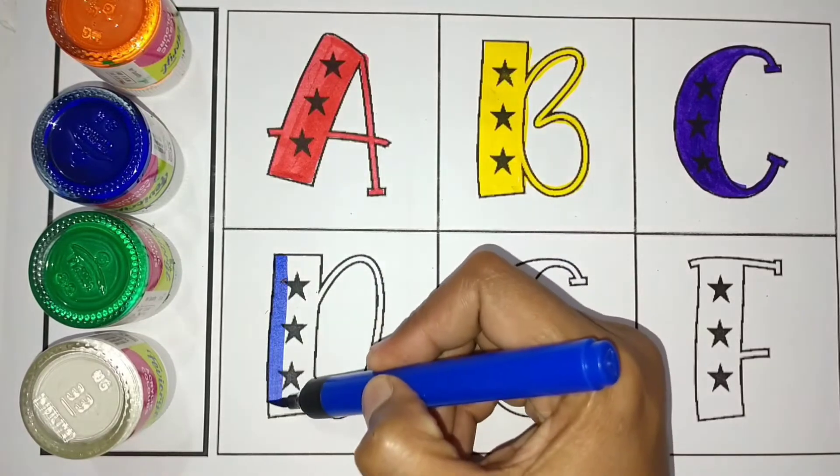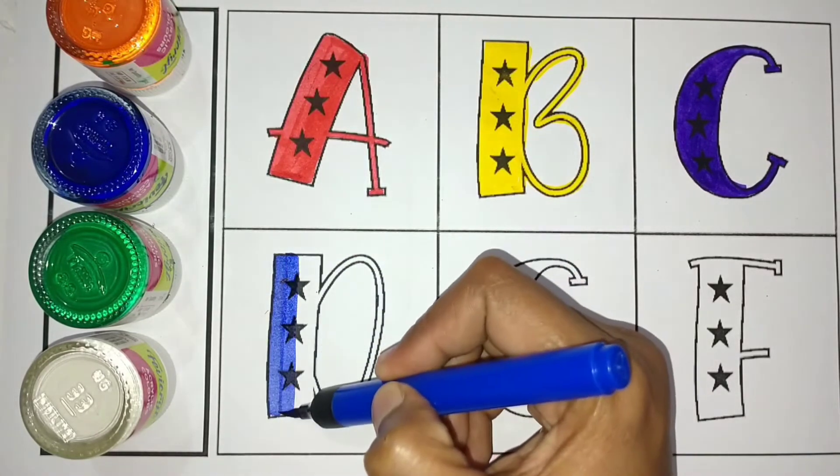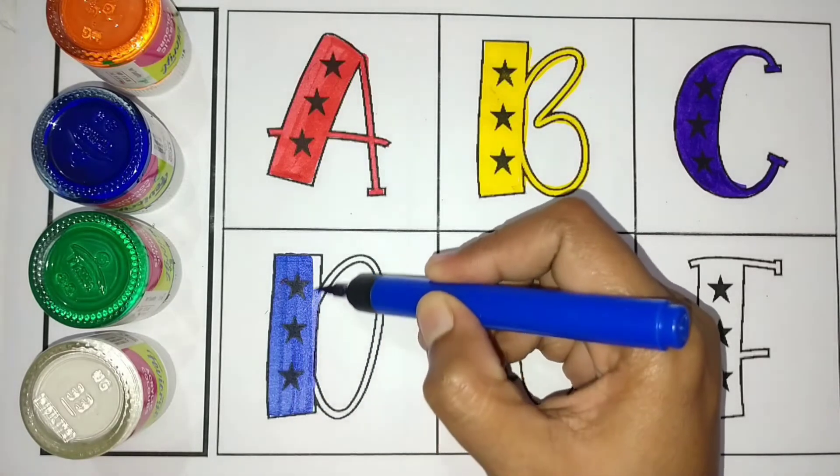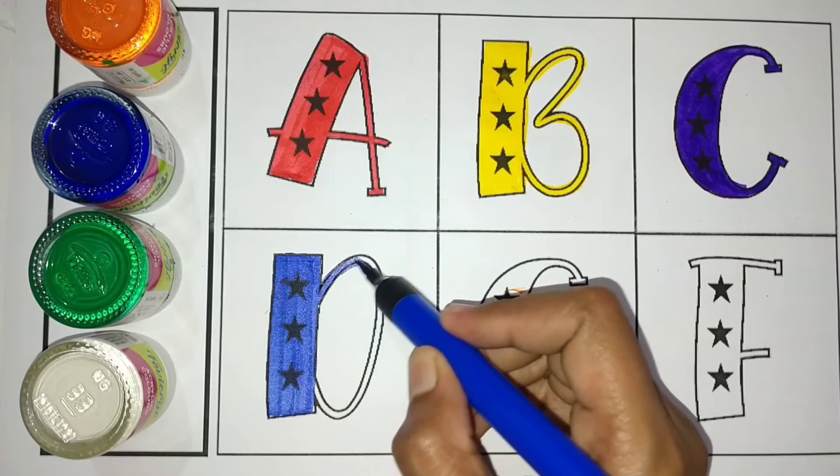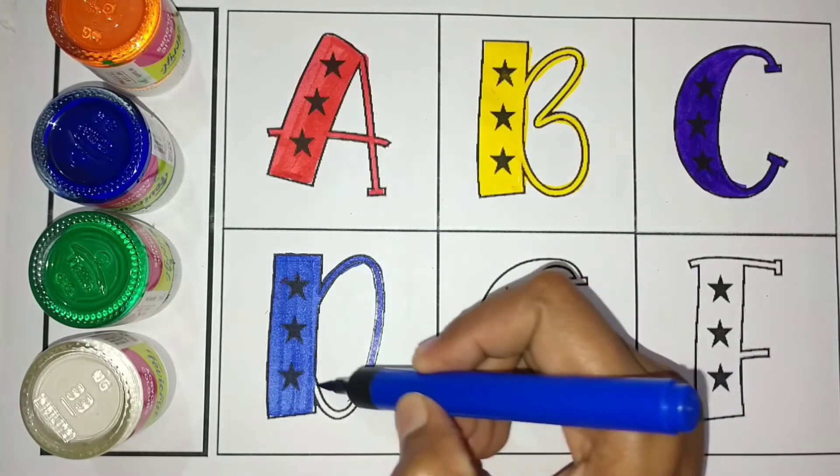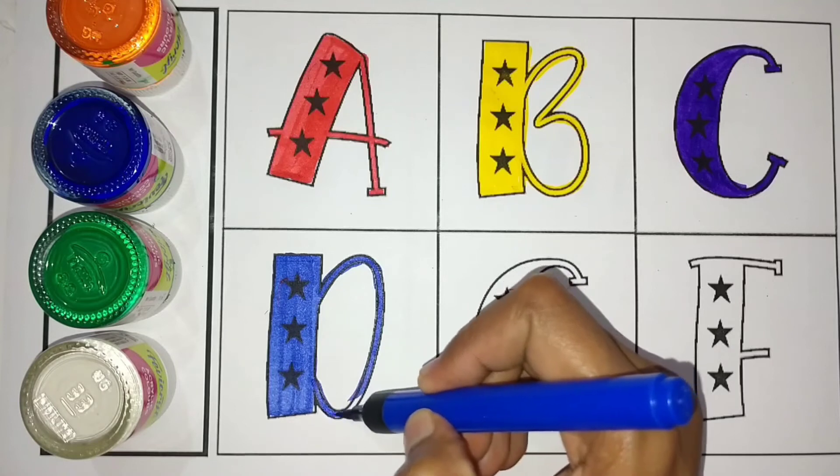Blue color, D, D for Duck. D, D for Duck. Duck means Batak. Blue color, D, D for Duck.